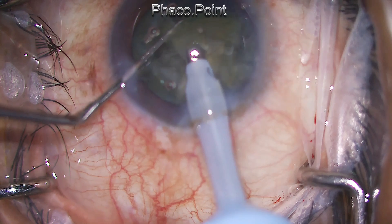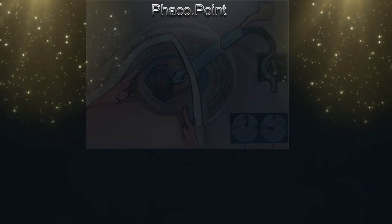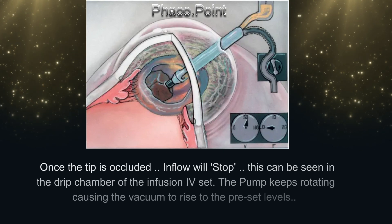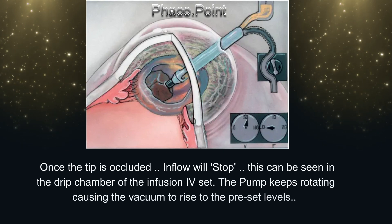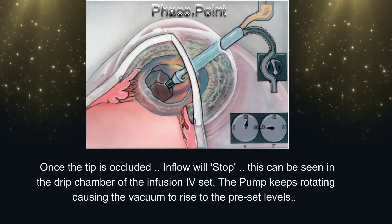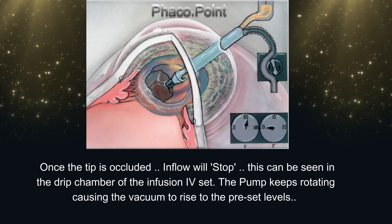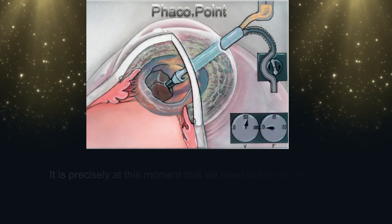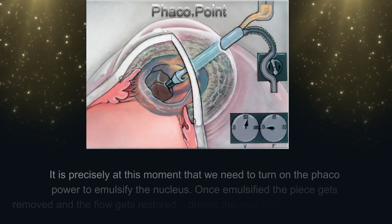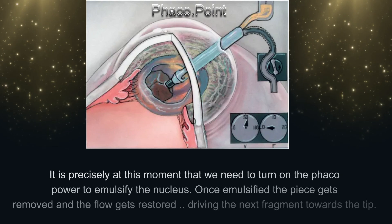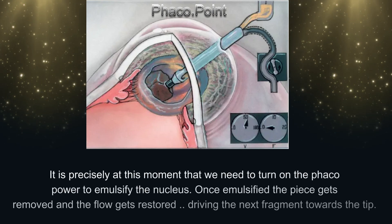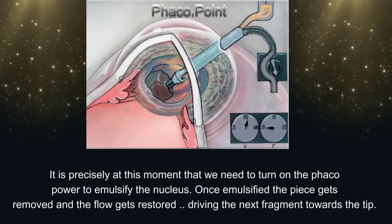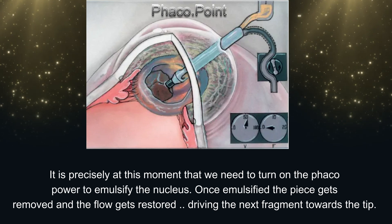Let's look at this in the correct perspective. Once the tip is occluded, the inflow will stop — this can be seen in the drip chamber of the infusion IV set. The pump keeps rotating, causing the vacuum to rise to the preset levels. It is precisely at this moment that we need to turn on the FACO power to emulsify the nucleus. Once emulsified, the piece gets removed and the flow gets restored, driving the next fragment towards the FACO tip.